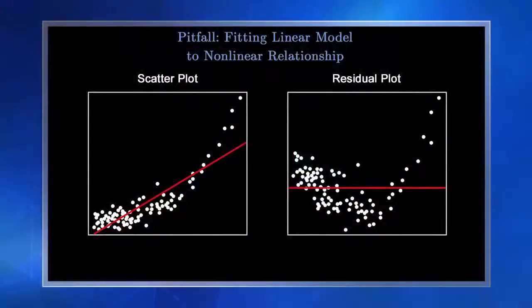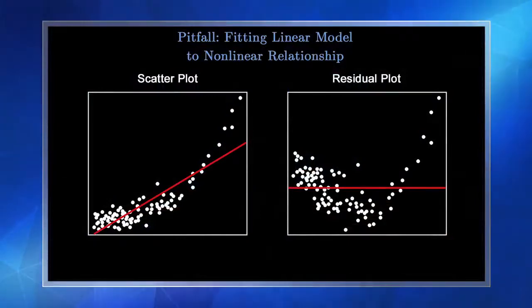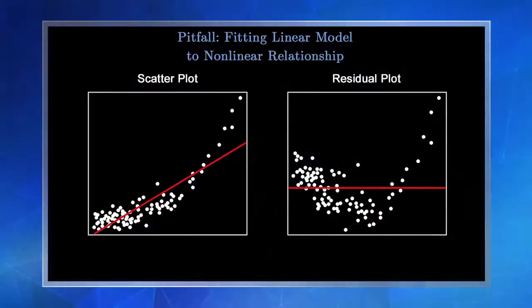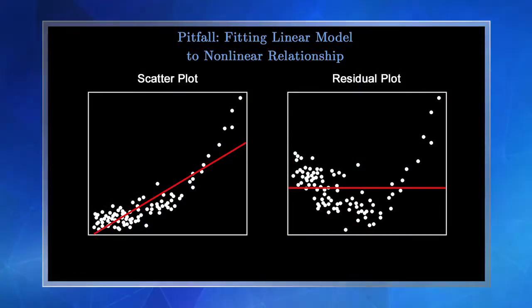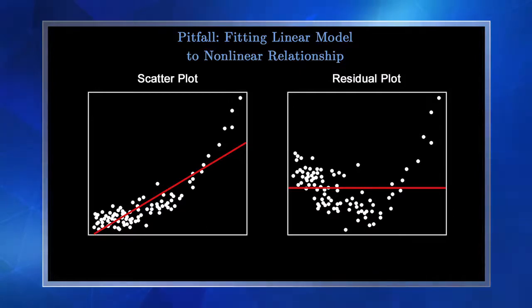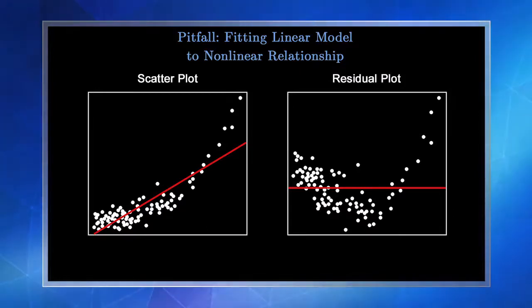It's always important to check the assumptions of your regression model — otherwise your results won't be valid, and these are some of the most common pitfalls students fall into. The first pitfall is fitting a linear model to non-linear data. Notice in this graph the data is slightly curved. While this linear regression fit isn't too bad, the residuals aren't normal — you see the same curve pattern showing up in the residuals as in the original data.